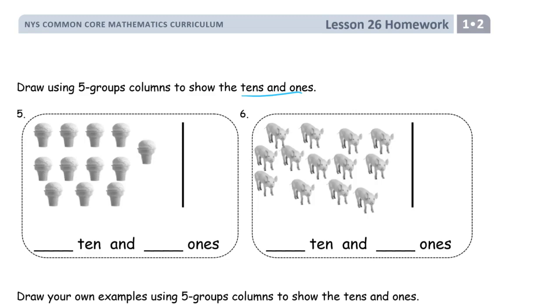So we have a 10 here, what do we have, 1, 2, 3, 4, 5, 6, 7, 8, 9, 10. So there's a group of 10, so 1, 10, and we see we have 2 ones left over, and now we have to draw it on the column, 1, 2, 3, 4, 5, 6, 7, 8, 9, 10, and then 2 more.